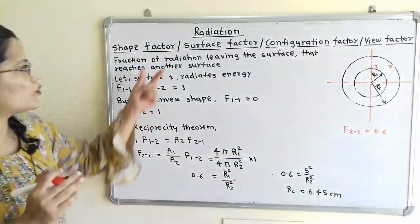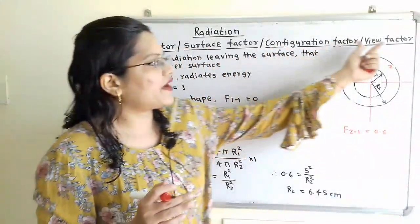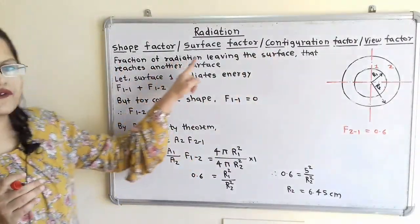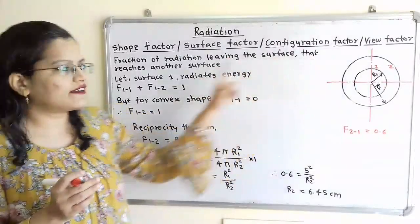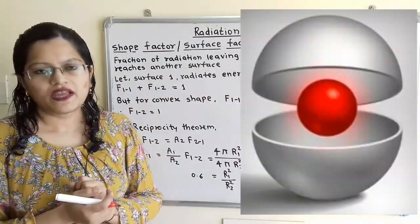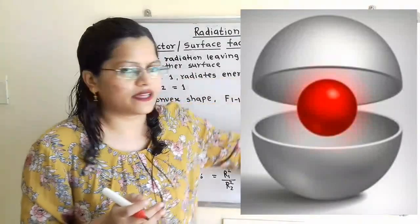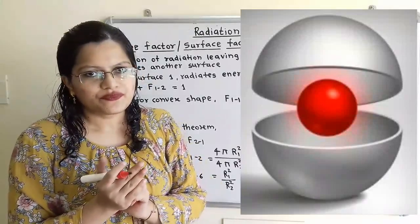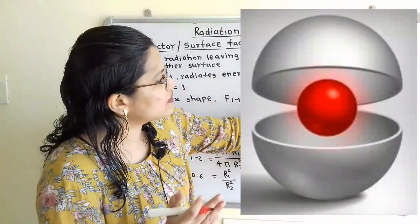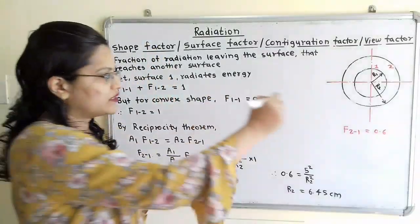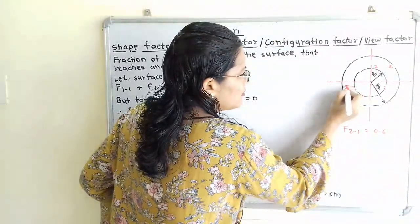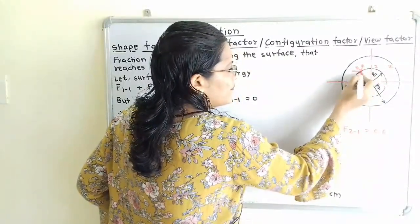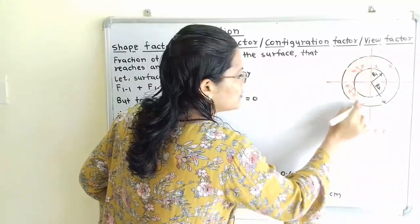Shape factor is also known as surface factor, configuration factor, and view factor. It means the fraction of radiation leaving a surface that reaches another surface. Applying this to our diagram: surface 1 radiates energy, and a fraction of that radiation reaches surface 2.